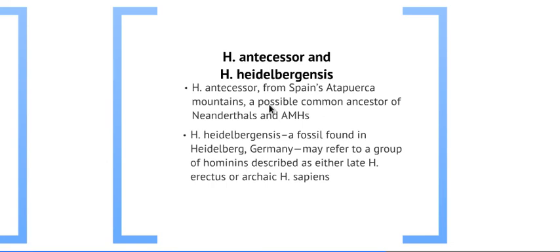In Spain, there's been a great deal of work done understanding the process of becoming modern humans. There's a site at Atapuerca that I've taken students to every summer. At Atapuerca they've been able to show a continuum going from Erectus all the way toward Neanderthal. They don't have Neanderthal specimens there, but they have the antecessor and Heidelbergensis — the ones that come before the Neanderthal.